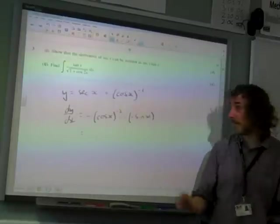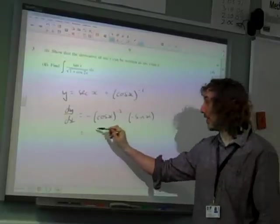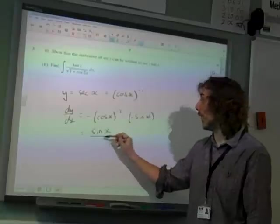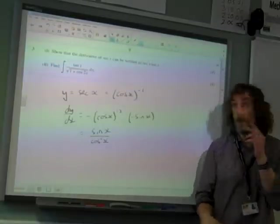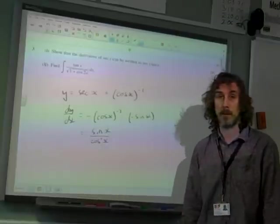So the minuses have disappeared here to give us a plus. We've got sin x over cos squared x, which is what you get if you differentiate sec x. You get sin x over cos squared x.